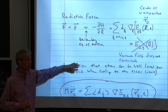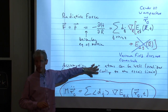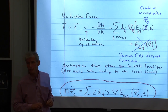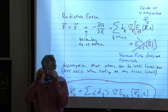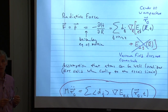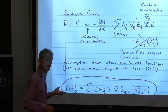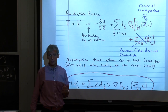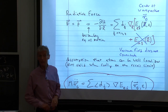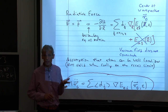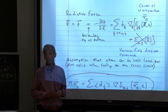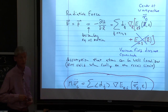Student: The vacuum field doesn't contribute in the sense that the expectation value is zero, but wouldn't the R and S value be non-zero? Professor: Exactly. In the end, when we talk about cooling limits, fluctuations from spontaneous emission provide heating. It doesn't contribute to the expectation value of the force. The vacuum has only fluctuations; it has no net force. But the fluctuations heat, and for heating it will be very important — we come to that a little bit later.